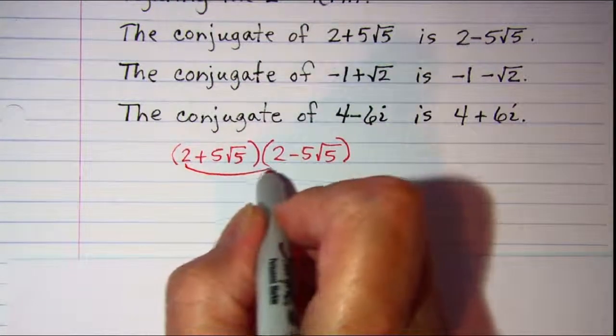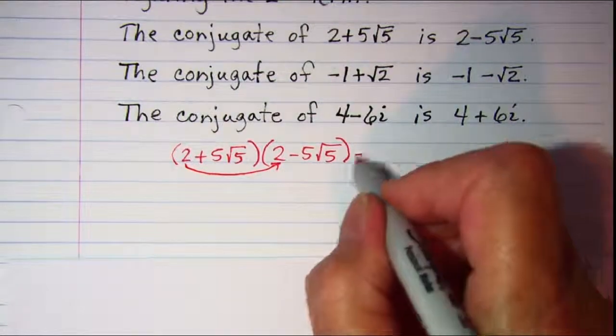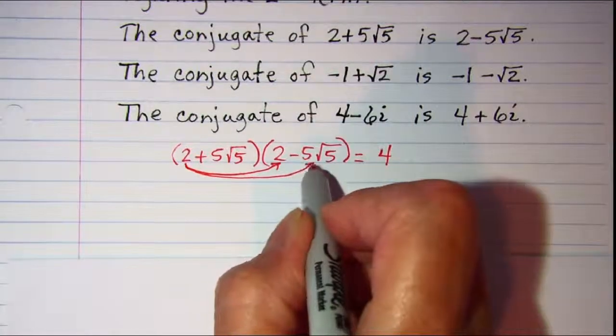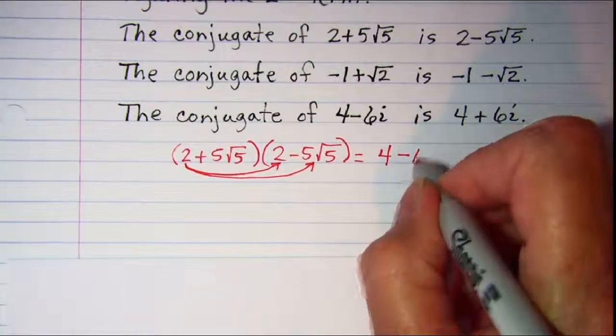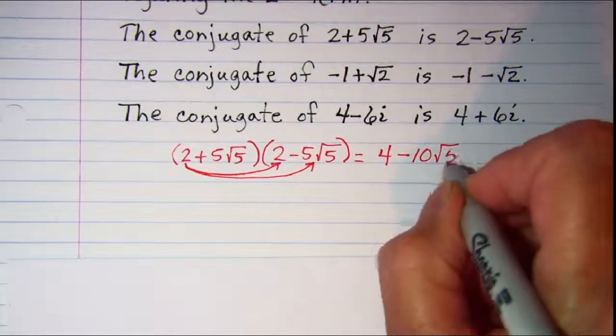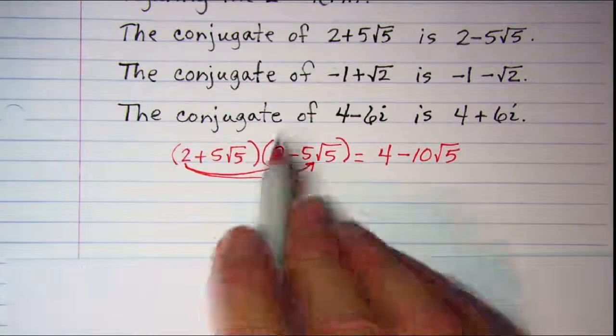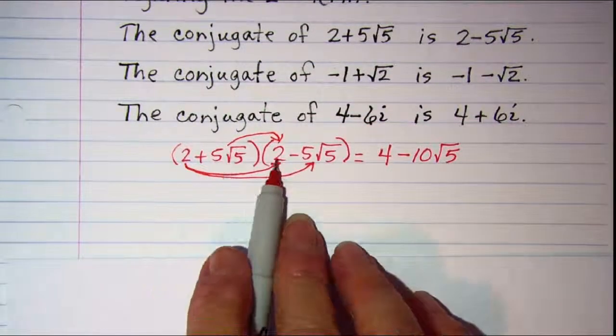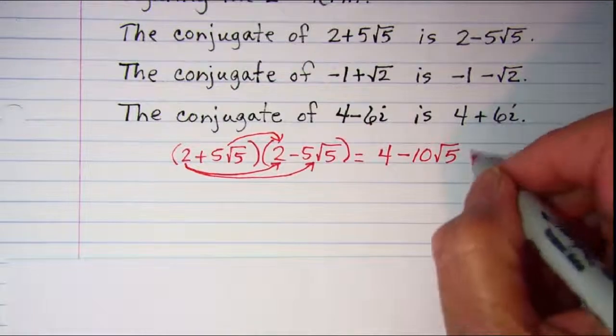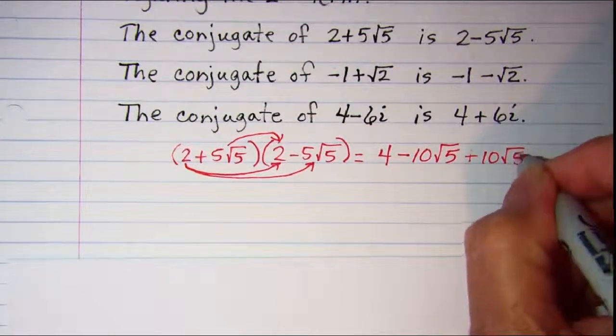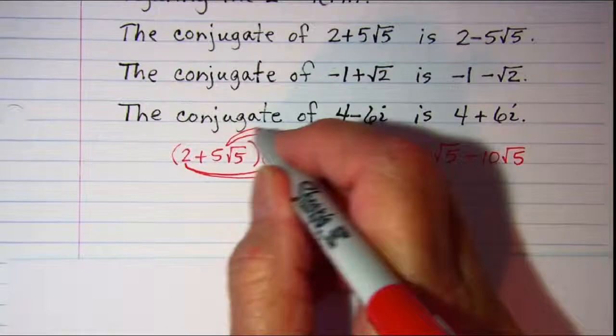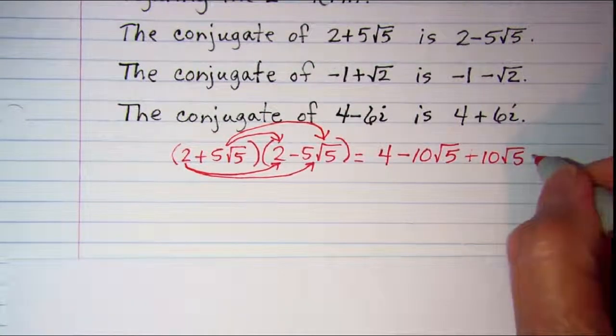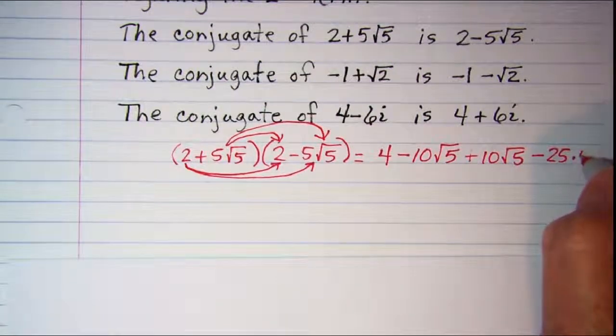The product of the first two, 2 times 2 is 4. Then 2 times negative 5 root 5 is negative 10 root 5. And then my inner product 5 root 5 times 2 is plus 10 root 5.